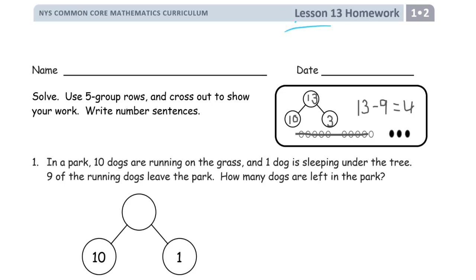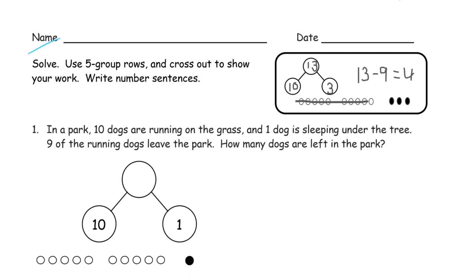Welcome to the homework for lesson 13, grade 1, module 2. Get your name on here first. We're using five group rows to solve and crossing out to show our work. We're going to write number sentences. That's the example right here. This is what they're looking for.